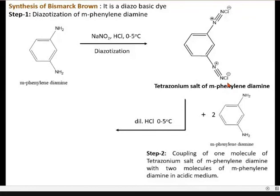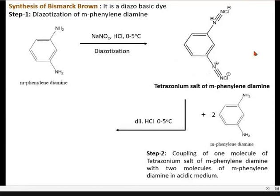Second is the coupling of 1 molecule of tetrazotized salt of meta-phenylenediamine with 2 moles of meta-phenylenediamine. The condition is slightly acidic at 0 to 5 degrees centigrade, because this is an uncharged molecule and it is unstable at normal temperature. So temperature is kept at 0 to 5 degrees for coupling.